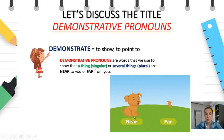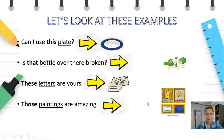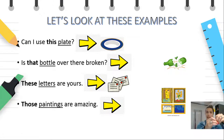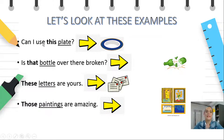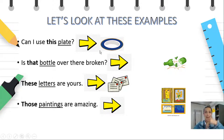As you can see on the picture with these two dogs, one is near, closer to you, and the other is far from you. Let's look at these examples. Can I use this plate? Is that bottle over there broken? These letters are yours. Those paintings are amazing. Now look at the first example: Can I use this plate? The plate is near to the arrow, near to you, and it's one — it's singular. So we say 'this plate.' We show to it, near to me.